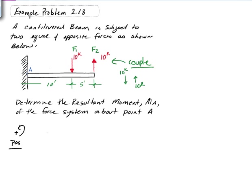We get 10 kips times 10 feet for F1, and that's in a negative sense because it's going clockwise about point A, so I'll put a negative in front of there. And then we have another 10 kips.